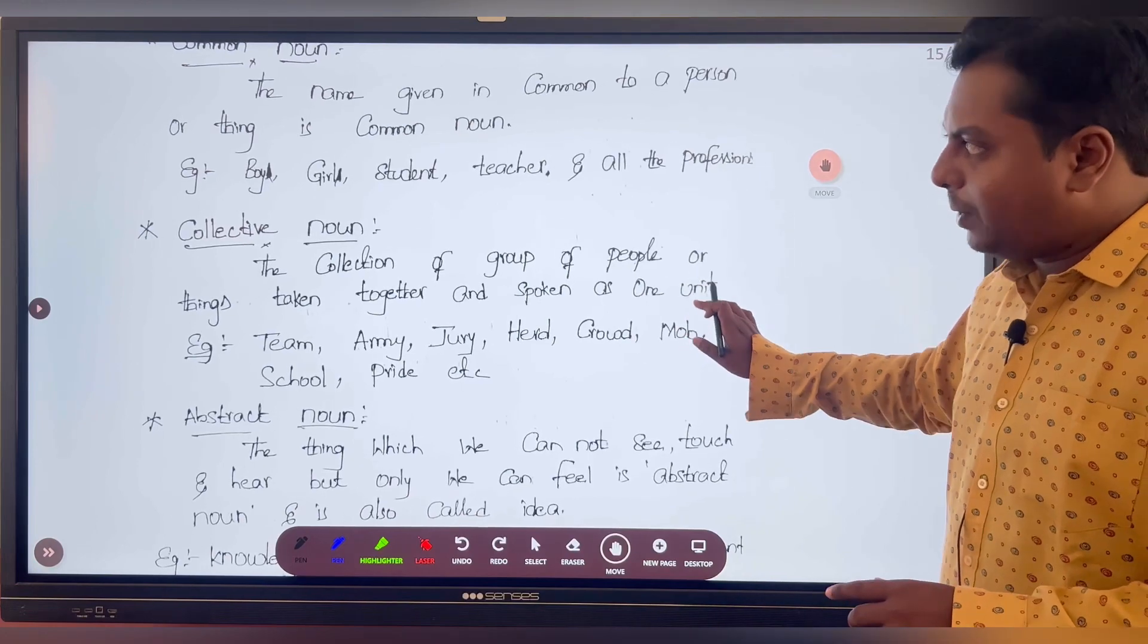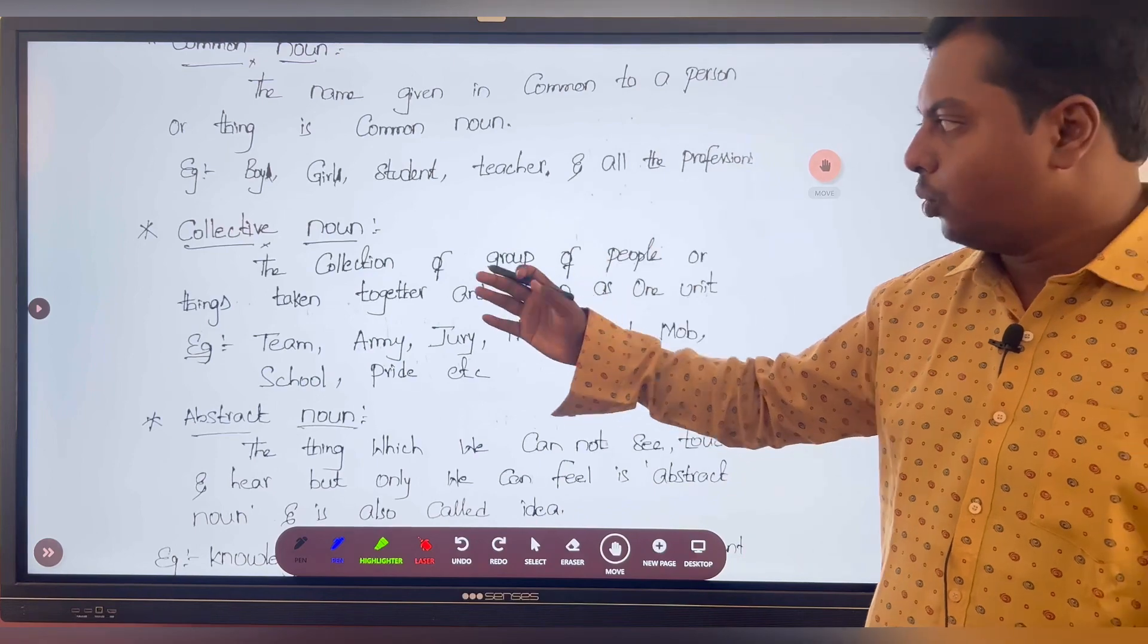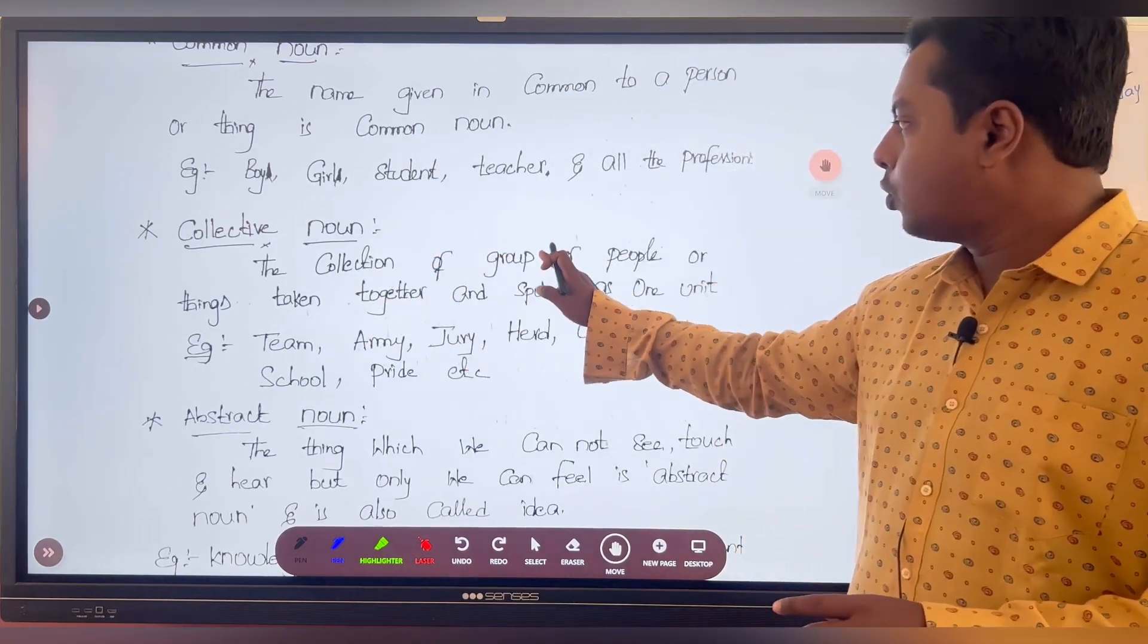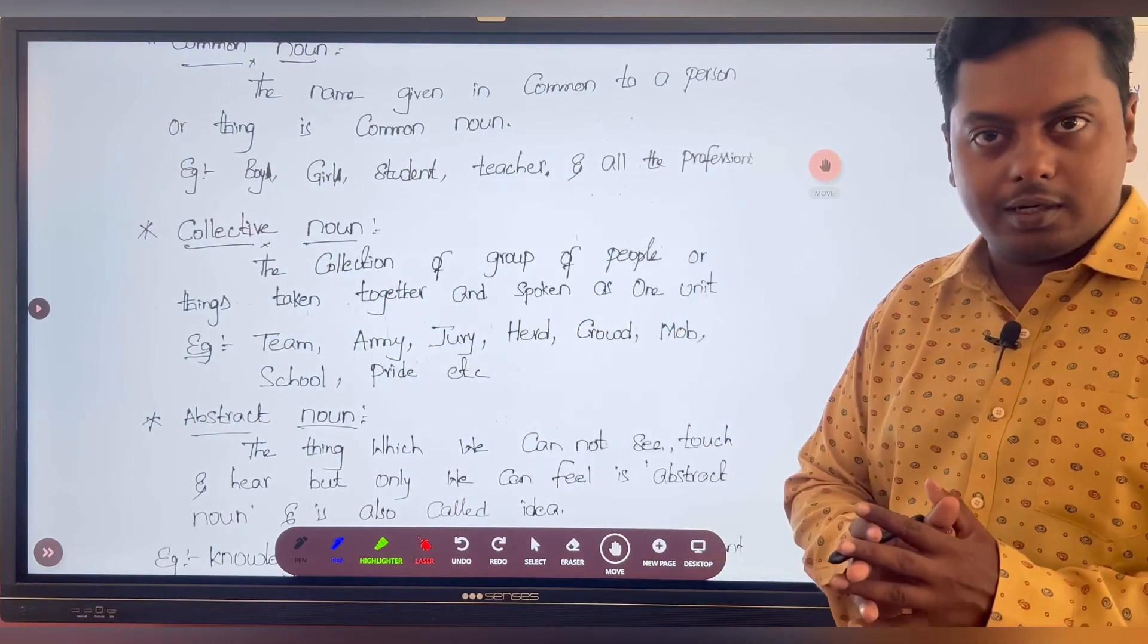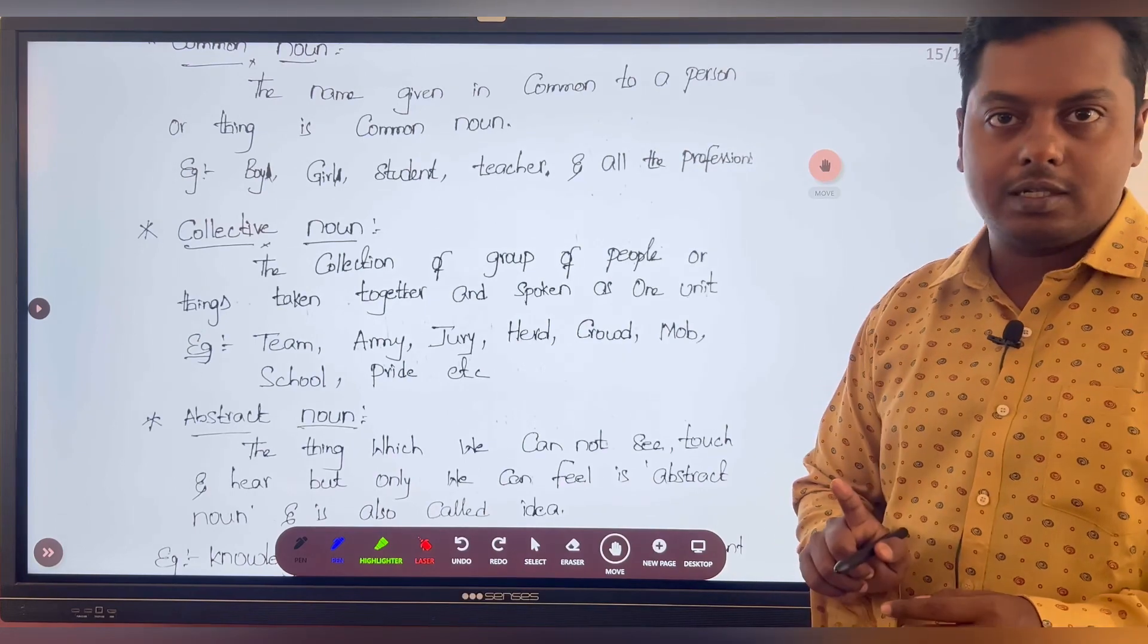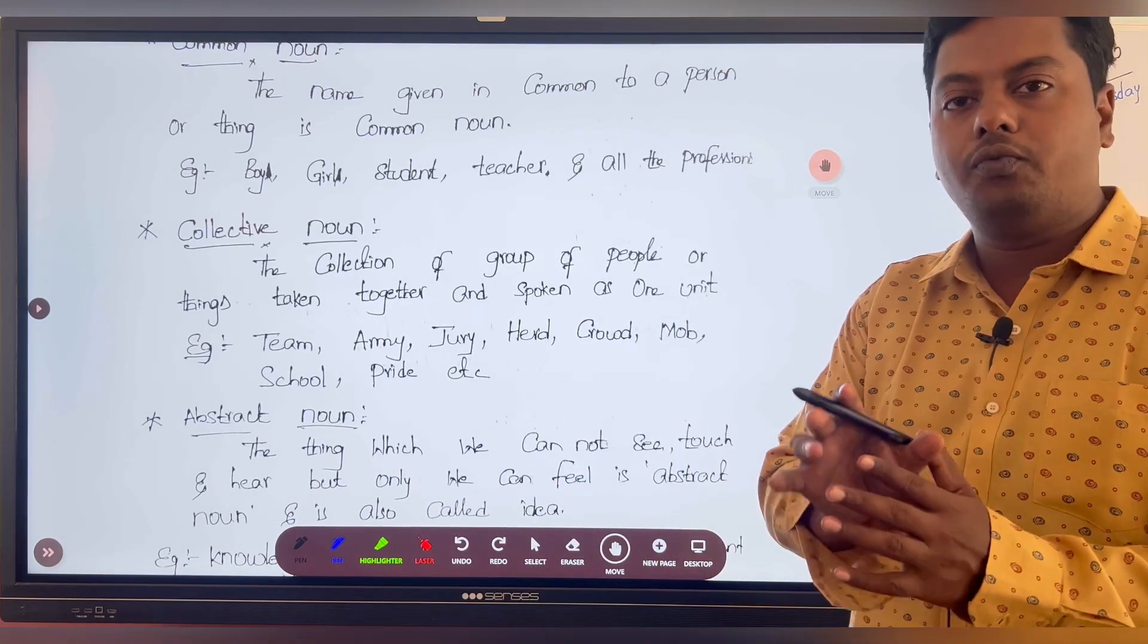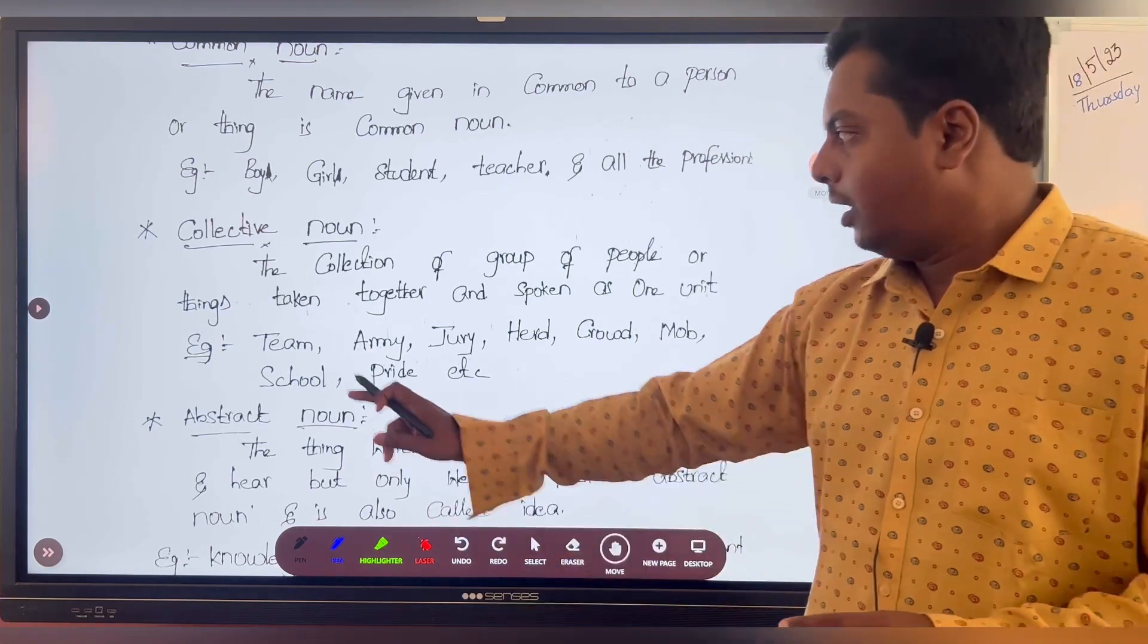Next, third type of noun is collective noun. The name itself tells—collection, collective. The collection of group of people or things taken together. All things taken together and spoken as one unit. Though they are in the group, we take it as only singular.